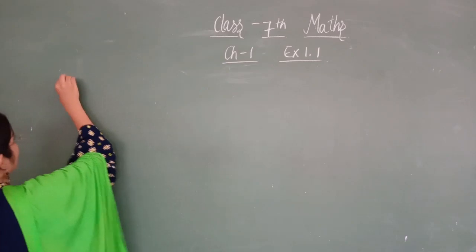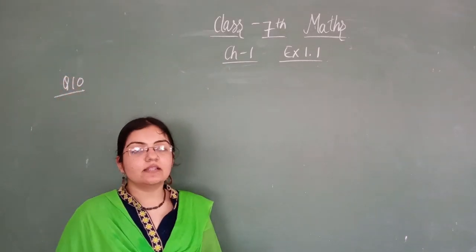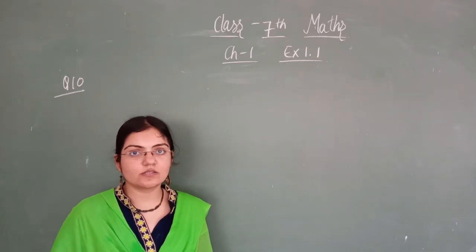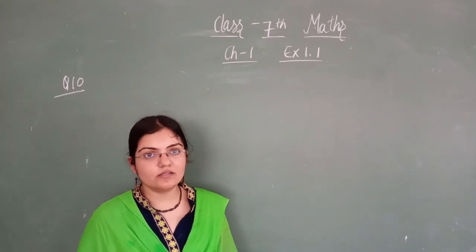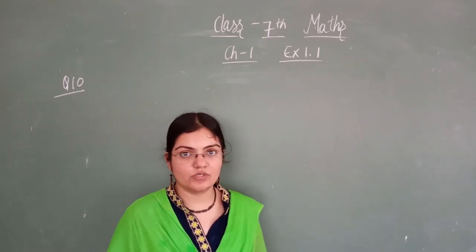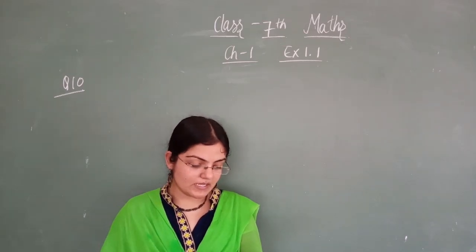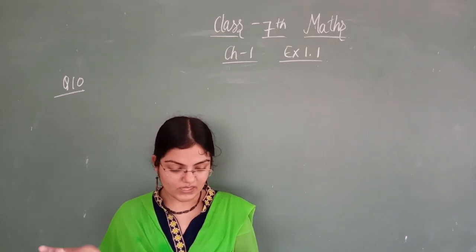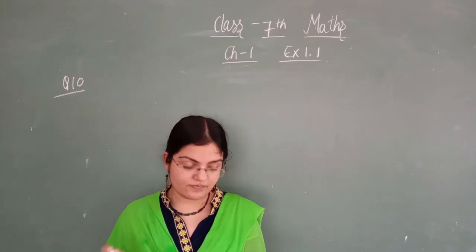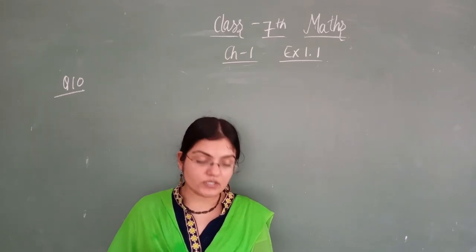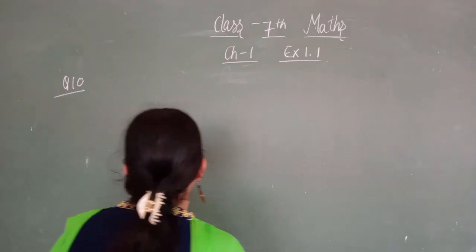So question number 10. Now question number 10 is a little bit longer question, so just understand this question very clearly and grab the concept into your mind. The question says: a water tank has steps inside it. A monkey is sitting on the topmost step, that is the first step. The water level is at the ninth step, meaning there are total nine steps.